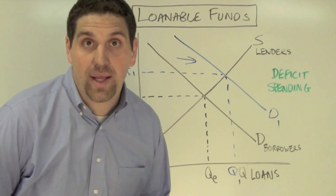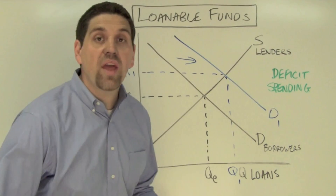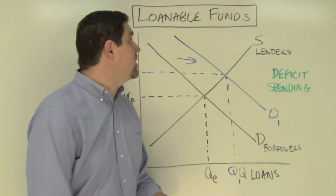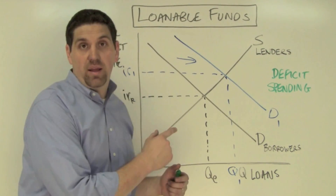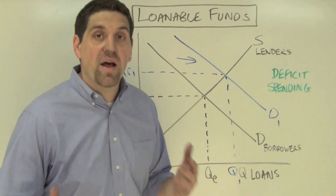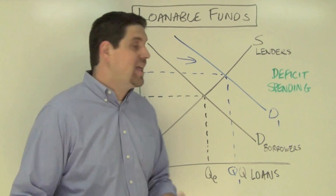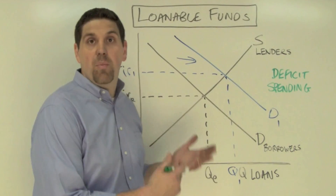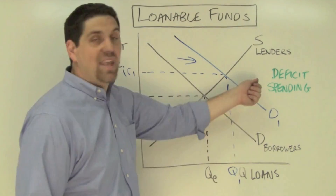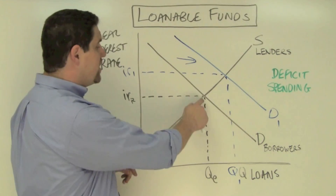This question asks you about crowding out. You can show the idea of crowding out using the loanable funds market. When the government spends more money than it brings in taxes, it goes to the private sector to borrow money for that deficit spending.